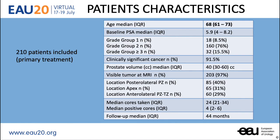The patient characteristics presented here were 210 patients with primary treatment, and as you can see, the vast majority of these patients were Gleason Grade 2, some Gleason Grade 3, and only 8% Gleason Grade 1. Almost all patients had a visible tumor on multi-parametric MRI, and almost all patients were worked up thoroughly with a targeted and template transperineal biopsy. The median follow-up of this group was 44 months.